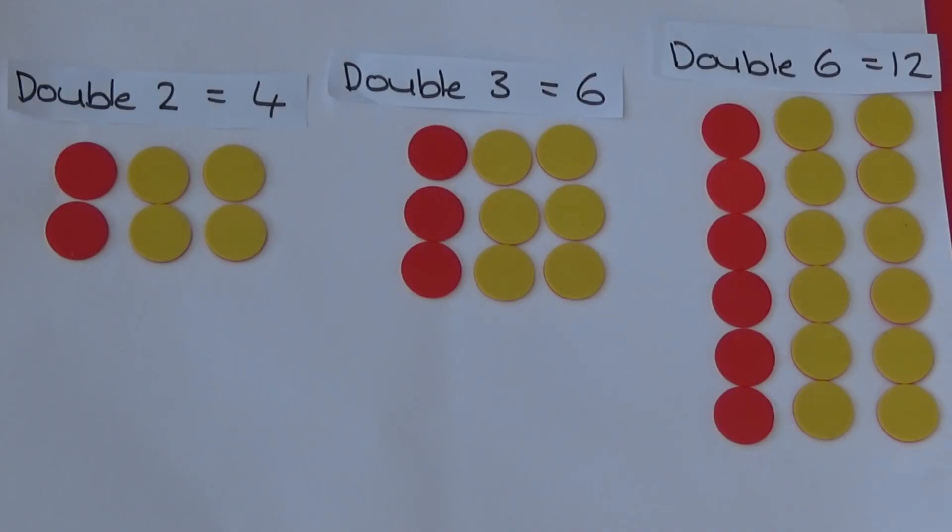Finally, we're going to use two-sided counters to help us understand doubles. Here, I've made two with the red counters and doubled it with the yellow counters. So, double two is four.